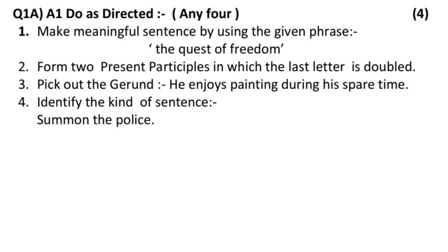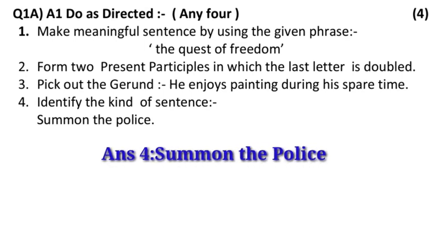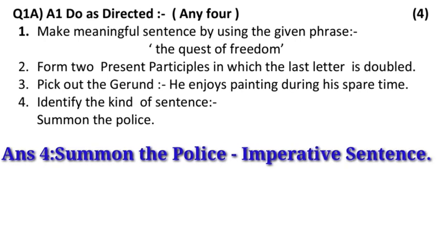The fourth point is: identify the kind of sentence. One sentence will be given to you and you have to identify which kind of sentence it is. The sentence given is 'Summon the police,' which is nothing but a command. Whenever you have a command, that kind of sentence is called an imperative sentence. You will write the sentence, then a dash, and then write 'imperative sentence,' as you can observe on the screen.